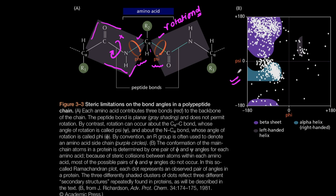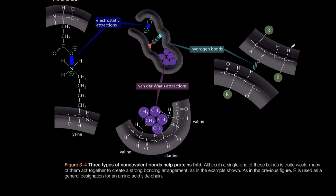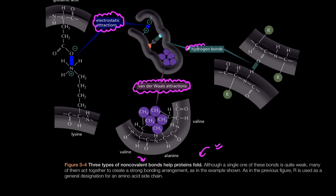The Ramachandran plot shows the allowed regions: this region corresponds to beta sheet, this region to alpha helix, and then there is the left-handed alpha helix region. Moving forward, the non-covalent bonds that help proteins fold are: electrostatic interactions, van der Waals attractions, and hydrogen bonds. These are the three major non-covalent bonds that help in folding of the protein.